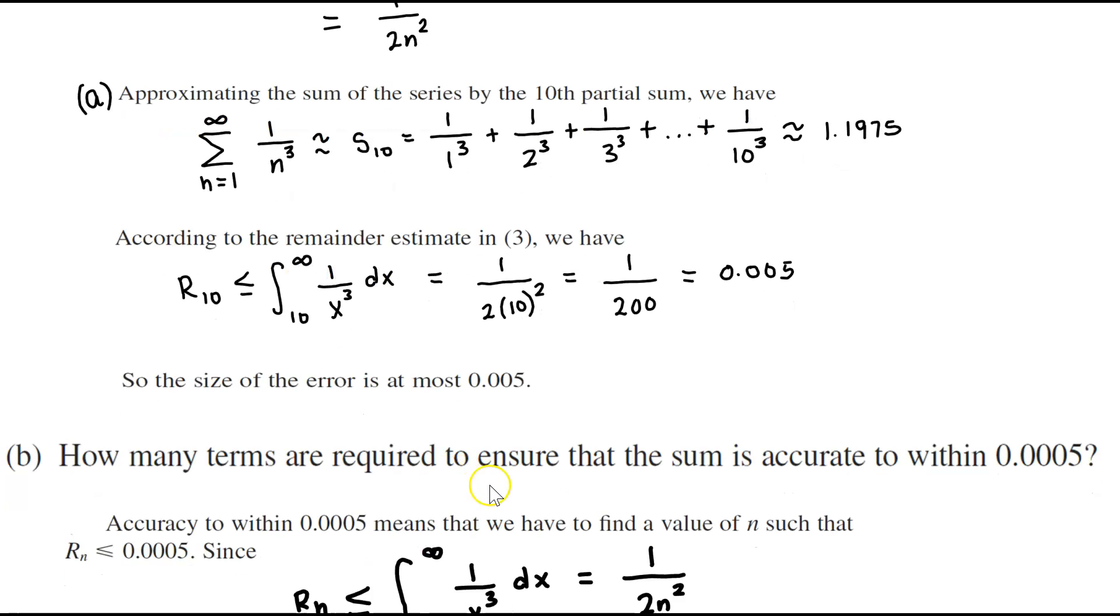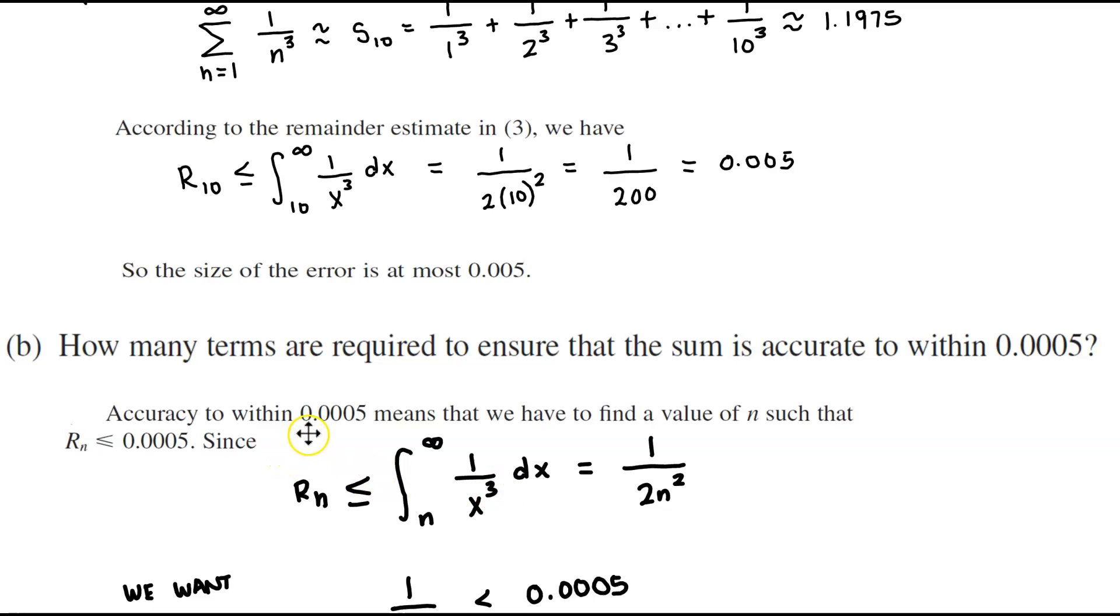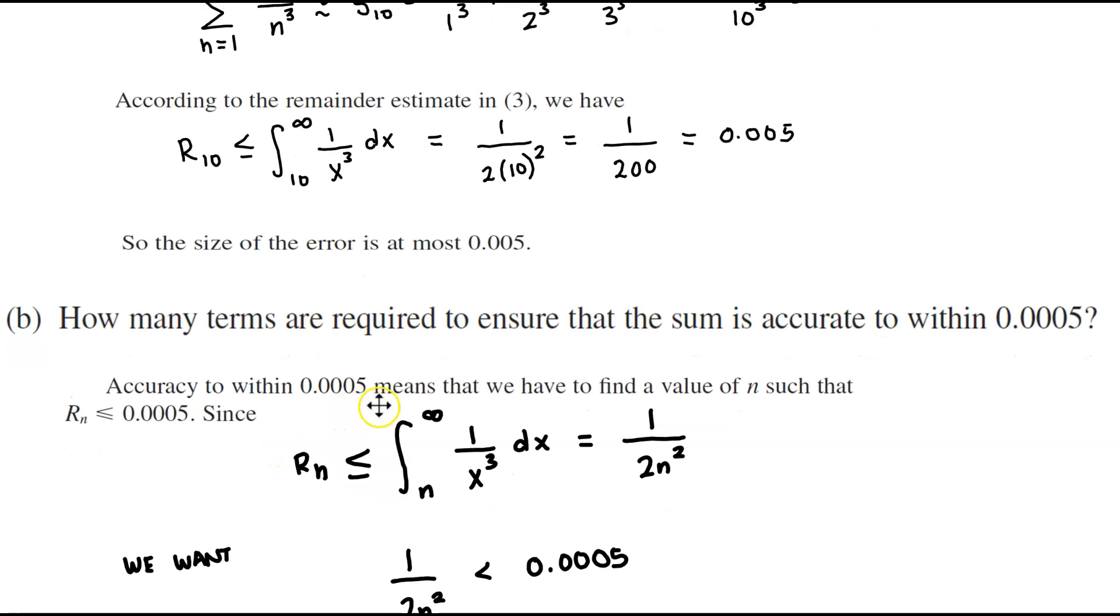Now how many terms are required to ensure that the sum is accurate to within 0.0005? Now accuracy to within 0.0005 means that we have to find a value of n such that r subscript n is going to be less than or equal to the value of 0.0005.